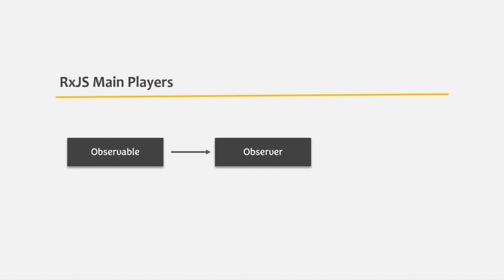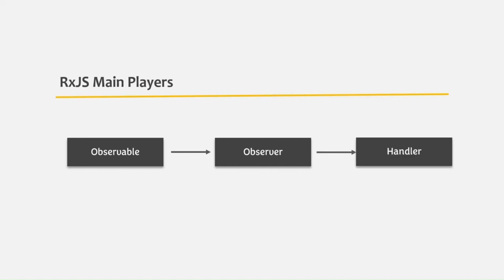The observable and the observer are the two main players in RxJS. The observable emits data, and the observer subscribes to that observable. Whenever the observable emits data, the observer gets notified and receives it. The observer can then do something with that data using a handler — though the handler is optional. If no handler is defined, the observer is notified but won't act on the data.